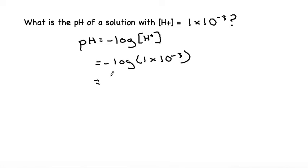Plugging that into the calculator, the log of 1 × 10^-3 is -3. So this would be negative of negative 3, which equals positive 3.